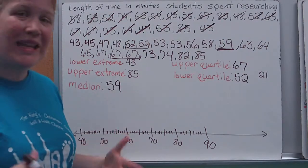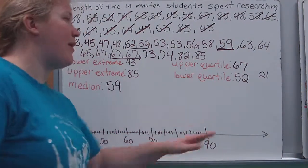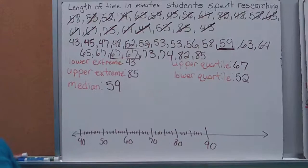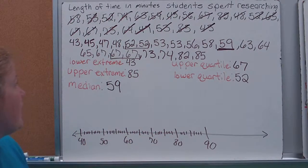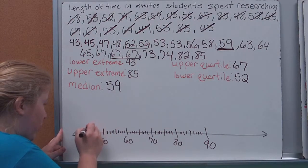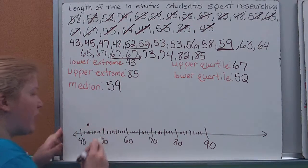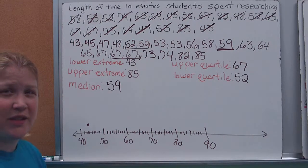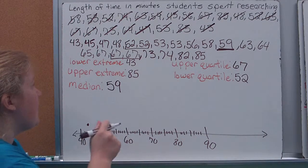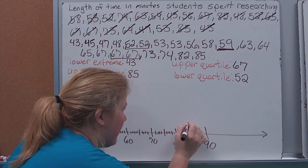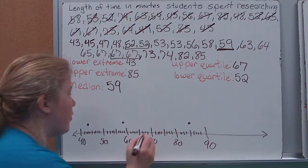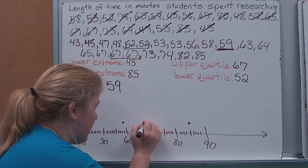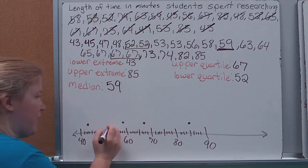I'm now going to take them. I don't need that number. That was just for me to calculate. And put them on here to make my box and my whisker plot. My lower extreme was 43. And you'll notice I'm not marking it on the line. I'm marking it above the line so that I can still read my numbers. My upper extreme was 85. My median is 59. Upper quartile is 67. Lower quartile is 52.